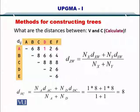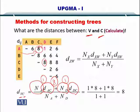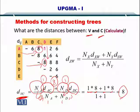Now let's consider the distance between V and C. To calculate the distance between V and C, the first thing you have to do is find out the number of sequences in A, so that's 1. Distance between A and C is 8. Number of sequences in D is 1, and the distance between D and C is also 8. So 1 times 8 plus 1 times 8 divided by 1 plus 1 — the answer is 8. The distance between V and C is 8.